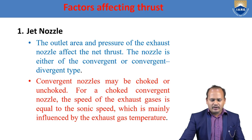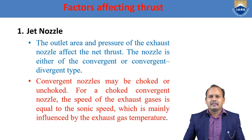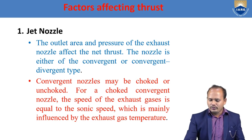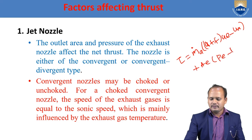In terms of factors affecting thrust, there are five factors which affect the thrust generation of an aircraft engine. The first one we are going to discuss is how exactly the nozzle, which is at the exit of the aircraft engine, affects the thrust produced. The thrust equation is: τ = ṁₐ × (1 + f) × (uₑ − uₐ) + Aₑ × (pₑ − pₐ).